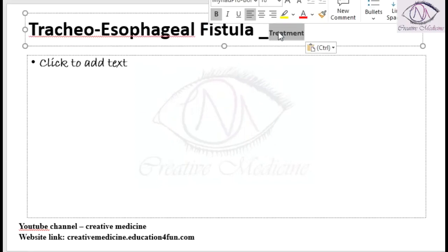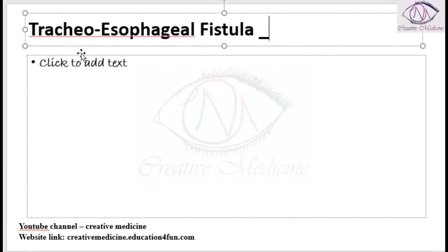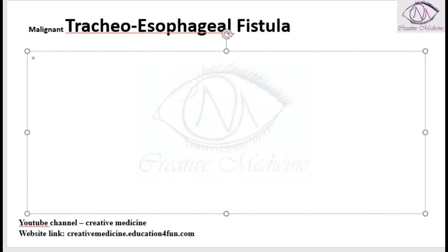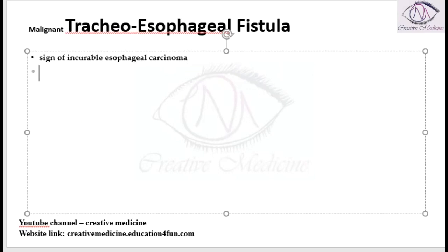In tracheoesophageal fistula, we have something called malignant tracheoesophageal fistula. Malignant tracheoesophageal fistula is actually seen in incurable carcinoma esophagus. It is mainly seen in carcinoma esophagus.